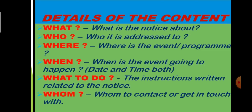Details of the content: when writing the body of the notice, remember these things. What is the notice about? Who it is addressed to — for example, class 7 students or class 6 to 8 students. Where is the event or program going to be held? When is the event going to happen — date and time. What to do — the instructions related to the notice, what you want from the listener. And whom to contact or get in touch with for further details — that is very important.